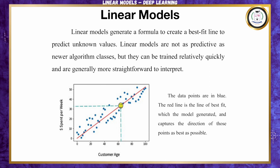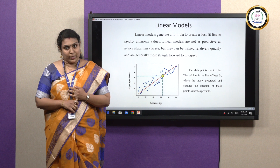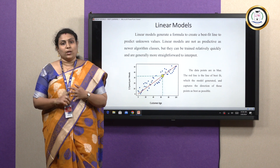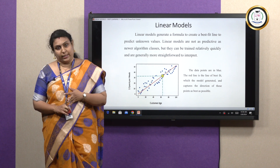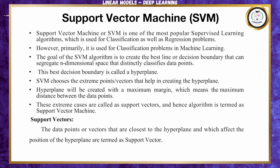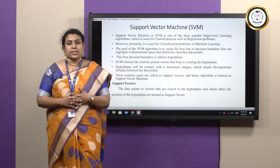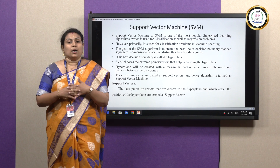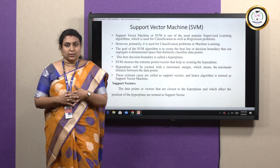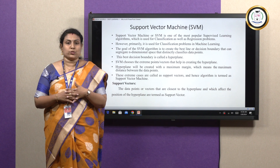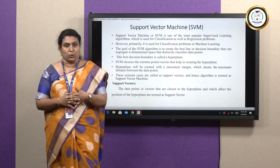In this linear model, we are going to see some important linear models: SVM, perceptron, and logistic regression. The first one is SVM. What is meant by SVM? It is Support Vector Machine. Support Vector Machine is a supervised learning algorithm and it is used for classification and regression problems.